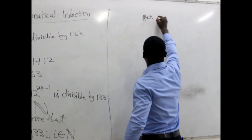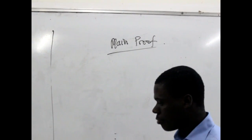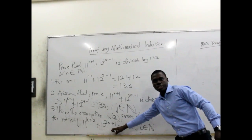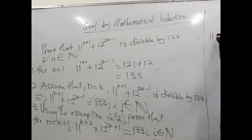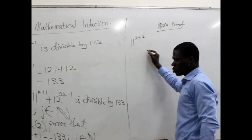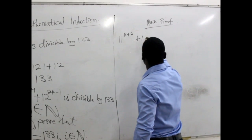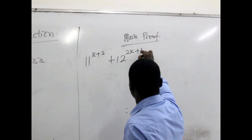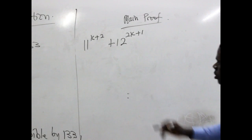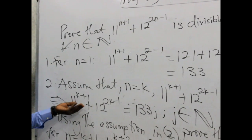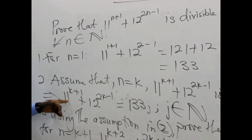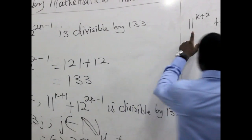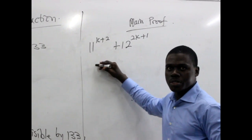Main proof. Let's start from this expression and engage in mathematical gymnastics to see whether at the end we will arrive at the required form. We have 11^(k+2) plus 12^(2k+1). We are doing this bearing in mind our assumption. We realize that we can reduce the expression using the idea of indices.